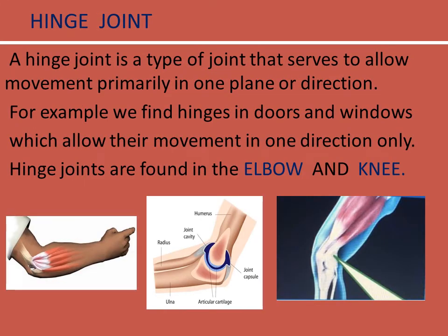Hinge joint: a hinge joint is a type of joint that serves to allow movement primarily in one plane or direction. For example, we find hinges in doors and windows which allow their movement in one direction only. Hinge joints are found in the elbow and knee.